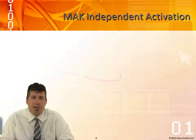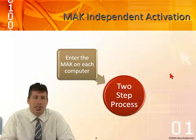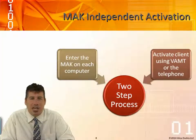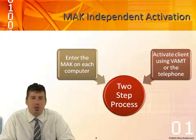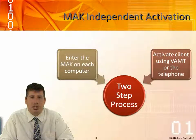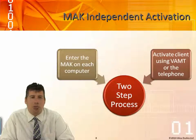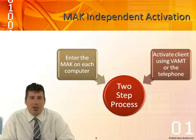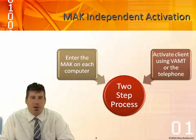For MAK independent activation, there's a two-step process: you enter the MAK on each computer, which is the key, and then you activate the client using the VAMT or the telephone. The VAMT goes across the network and checks for internet access to activate Windows. Alternatively, you call Microsoft's automated system, read back the installation ID, and they give you a confirmation code that activates the product as a genuine Microsoft product.